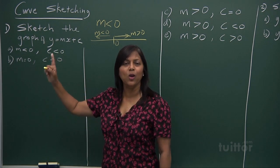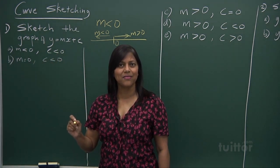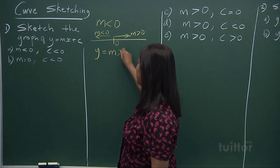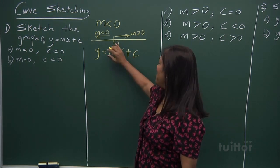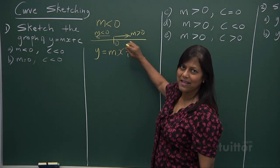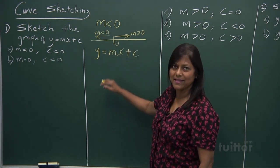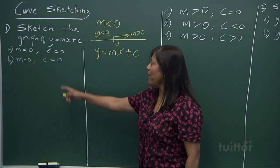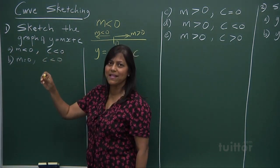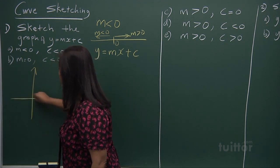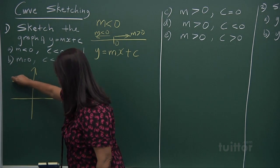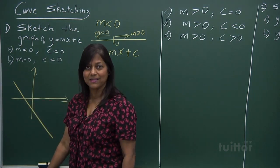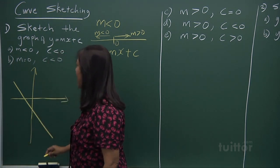And on top of that, look at your c. Your c is less than 0. If c is less than 0 and x is 0, it is going to be cutting the y-axis below the origin. So in this case, where m is less than 0 and c is less than 0, your graph can look like anything where the gradient is negative — a negative, downward gradient — and the c is below the y-axis. This is a situation of a straight line.